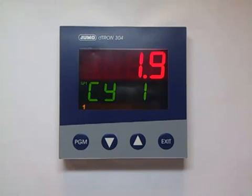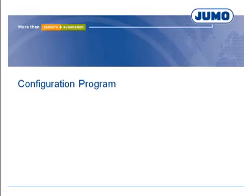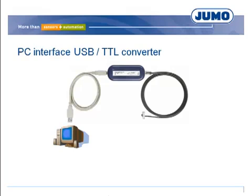For further information regarding self-optimization, please refer to chapter 7.1 of the technical book Control Engineering – A Technical Guide. Alternatively, the configuration can be done via the optional configuration program. For transferring of configuration data, the PC interface USB TTL converter is necessary.